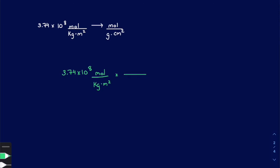Kilograms needs to go on top to cancel out the kilograms on the bottom. We know that one kilogram is 1000 grams, so there's your conversion. We cancel out the kilograms and follow through — we are dividing by 1000, so our answer is 3.74 times 10 to the 5th moles over gram times meters squared.